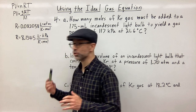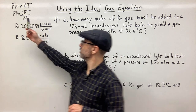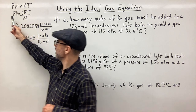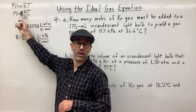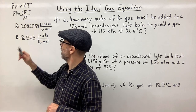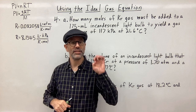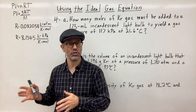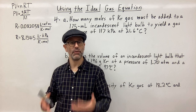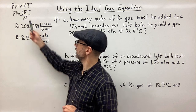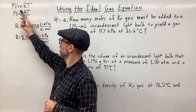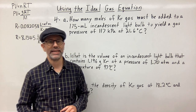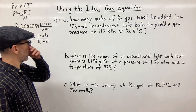There are two forms of this equation we're going to use. There's the form PV = nRT where you have moles, and then there's the form where instead of moles you have mass in grams (g) divided by the molar mass. So we replace the number of moles with just the mass divided by the molar mass. We're going to demonstrate that in this video. Let's start with problem number one.